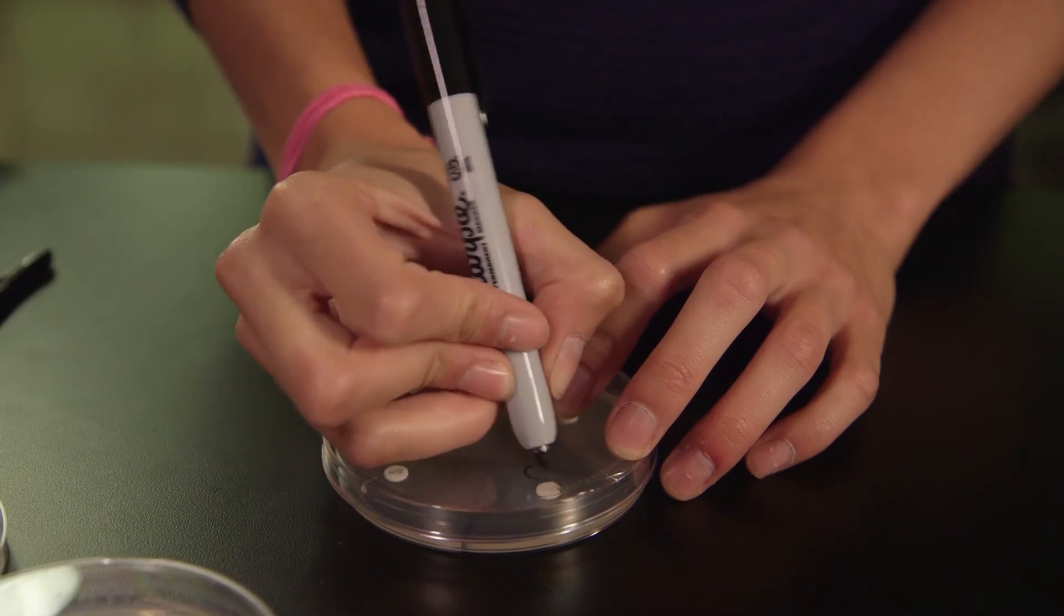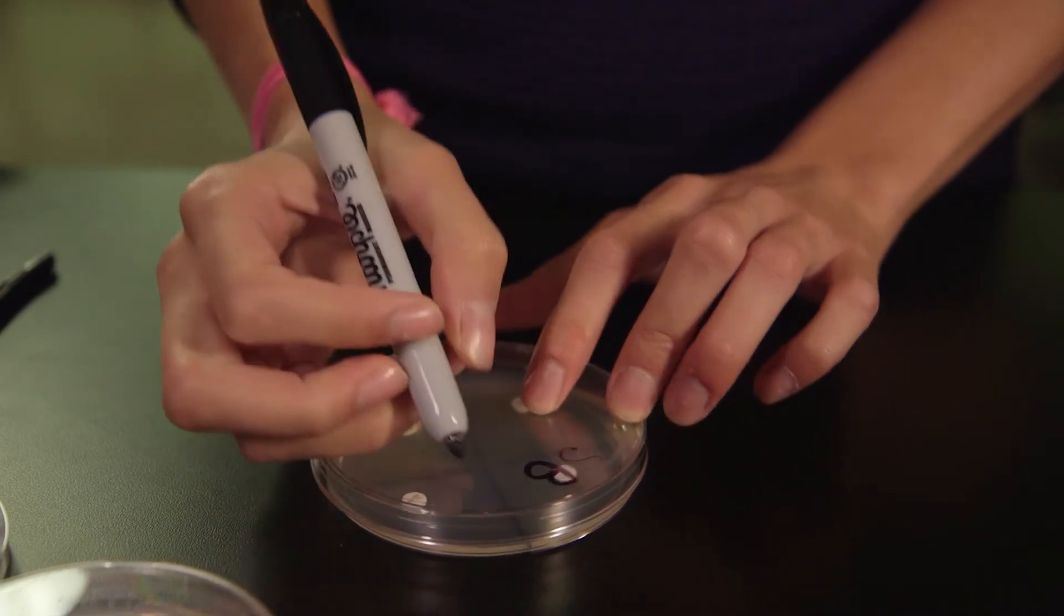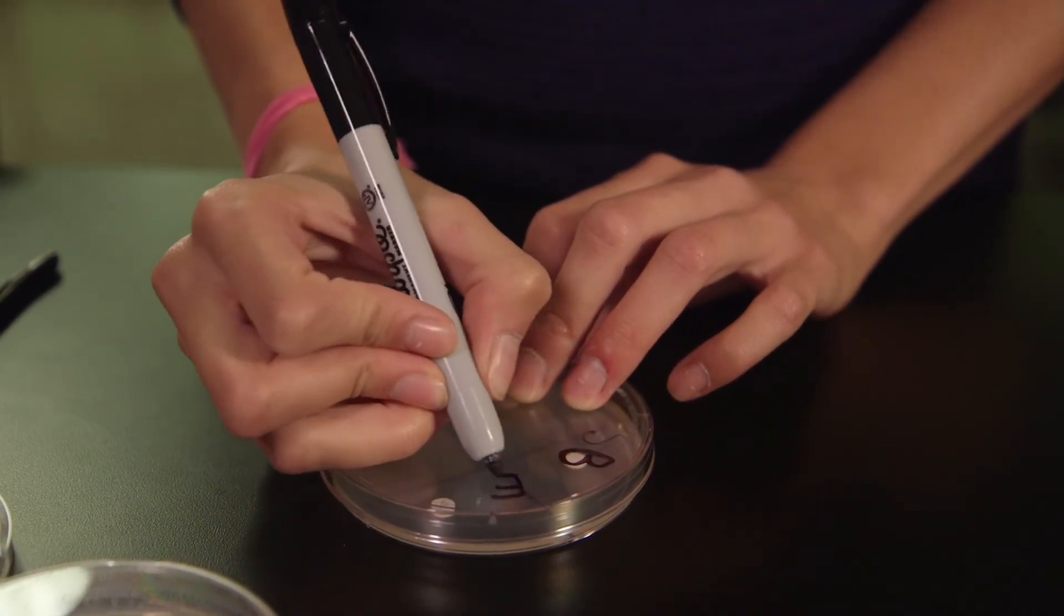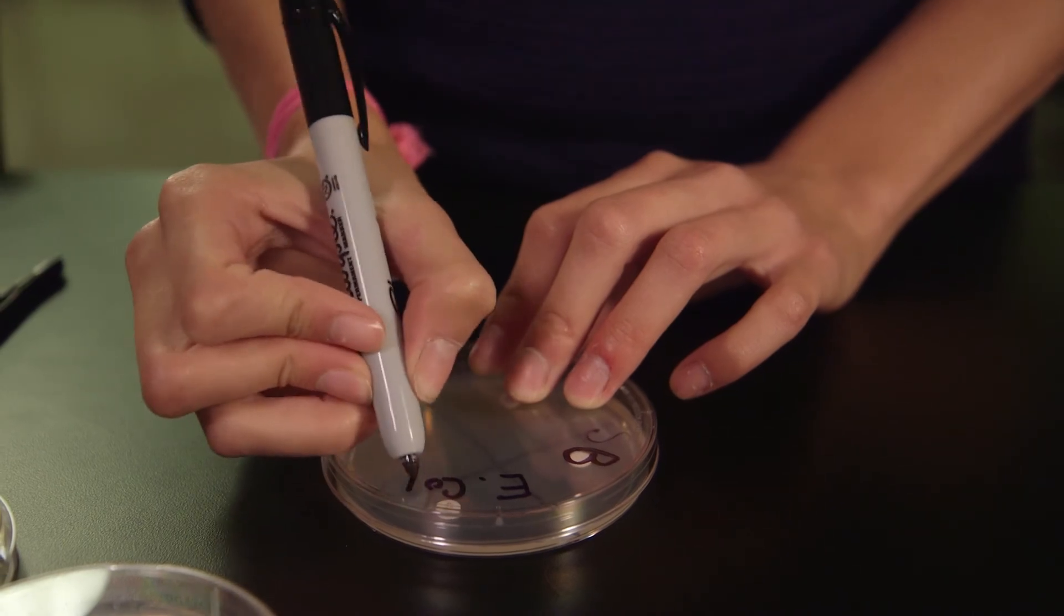Place your initials and the initials of the bacteria on the lid of the petri dish. That is, the part without the agar. The TA will collect your plate when you have finished.